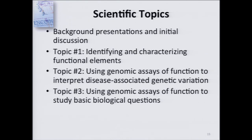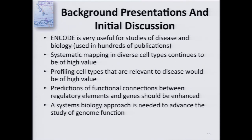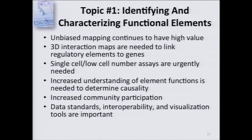The workshop was structured around four basic topics: background, mapping functional elements, disease studies, and basic biological questions. From the background presentations, key messages included: ENCODE is very useful for studies of disease and biology, as evidenced by hundreds of community publications; systematic mapping in diverse cell types continues to be important, including profiling disease-relevant samples; better information is needed about functional connections between regulatory elements and genes, since a variant doesn't necessarily lie in the gene it's linked to — it may be several genes away. The importance of systems biology approaches to integrate this knowledge was also highlighted.